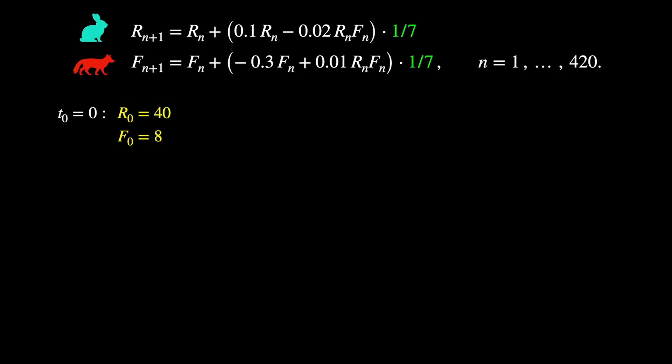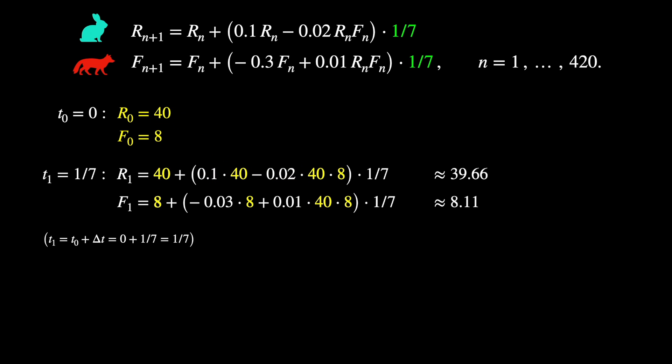So when time equals 0, we know from our initial conditions that there are 40 rabbits and 8 foxes. Now we apply the method. We go from time equals 0 to time equals 1/7. The unit there is 1/7 of a week. And here's how we get our approximated values for the rabbit and fox populations after a day has gone by. So what we're going to do is take the previous values and insert them into the equations. Looking at this pair of equations, notice that only the 40 and the 8 need to be updated every time we do the iteration. The 0.1, 0.02, 0.03, 0.01 and 1/7, those stay the same. So it's a funny result if you're talking about members of a population, but our estimate says there should be 39.66 rabbits and 8.11 foxes.